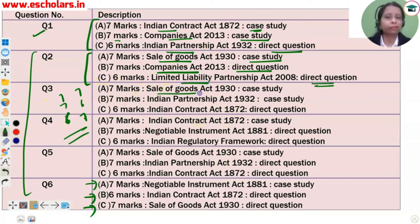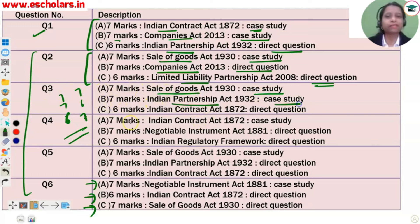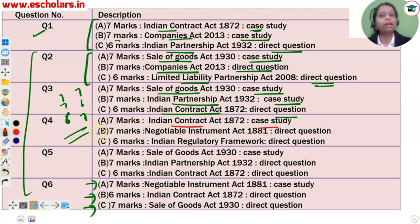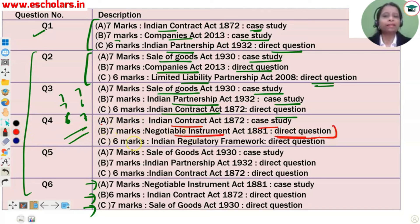Question 3: A part is Sale of Goods Act, B part is Indian Partnership, and C part is Indian Contract Act. Question 4: A part is Indian Contract Act, case study; B part is Negotiable Instruments Act, direct question; C part is Indian Regulatory Framework, direct question, 6 marks.